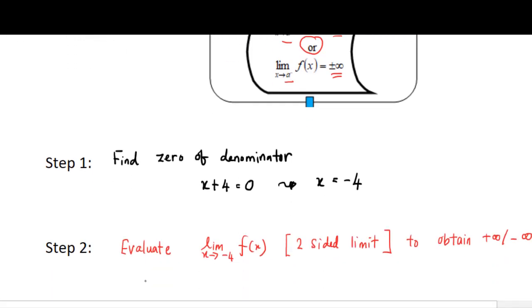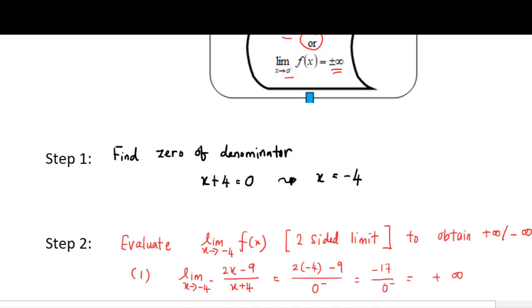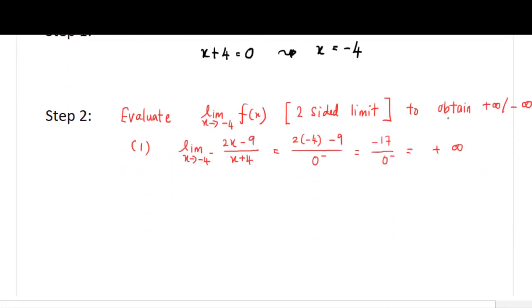So when the limit approaches negative four from left, the ratio we get is a constant over zero. So from the left, it's a zero minus, so the overall ratio is a positive infinity. So when it comes to the right-hand side limit, we also get that it's a constant number over zero, but it's a negative over zero plus, so the overall is a negative infinity.